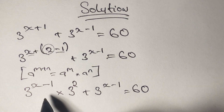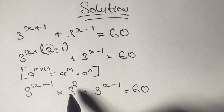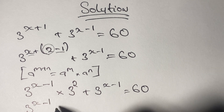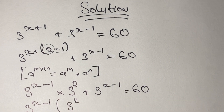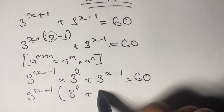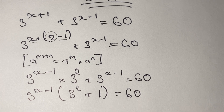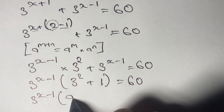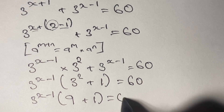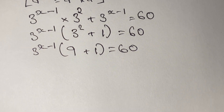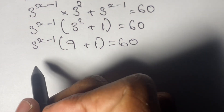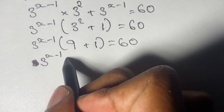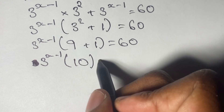Now if you look closely, you can see why we did what we did — we can factor out our 3 to the power of x minus 1. So in factoring this out, we would have 3 to the power of x minus 1, in bracket, keeping back our 3 squared, plus 1, so we'd have 3 squared plus 1, all equal to 60. Now, 3 squared is 9, and 9 plus 1 is 10, so we can simplify further. We have 3 to the power of x minus 1, times 10, in bracket, is equal to 60.